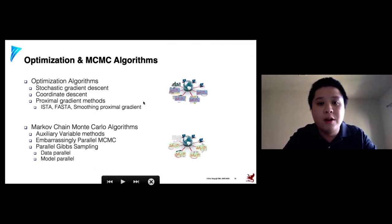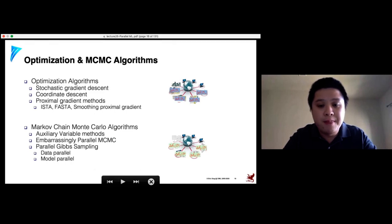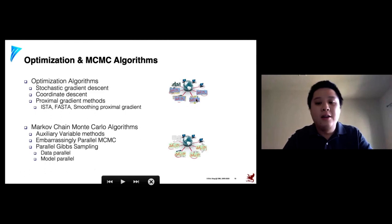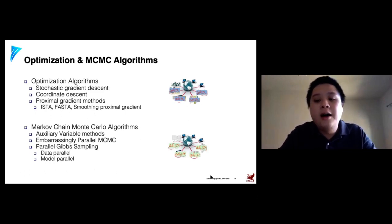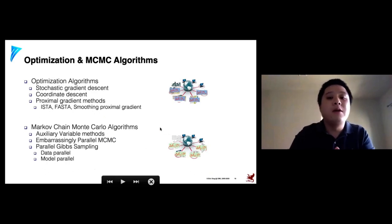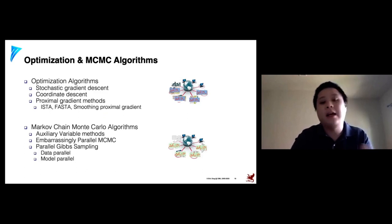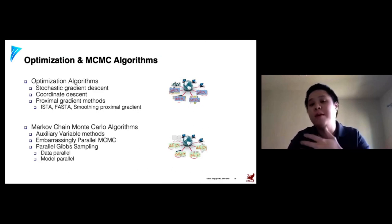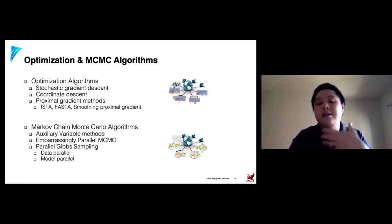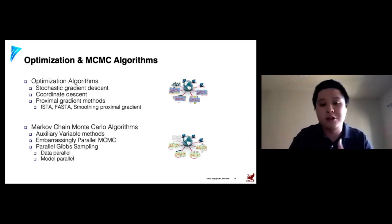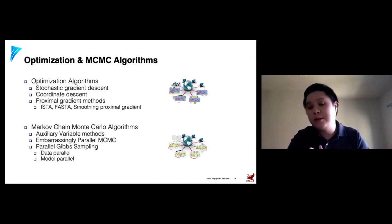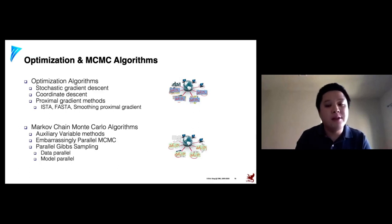I want to pause here and ask for any questions before moving on. We're going to start by talking about optimization algorithms — stochastic gradient descent, coordinate descent, and proximal gradient methods — and how we parallelize and scale them up to handle the big data, big model challenge. Then we'll talk about Markov chain Monte Carlo algorithms, and after that we'll move on to scalable ML systems and the principles behind them.